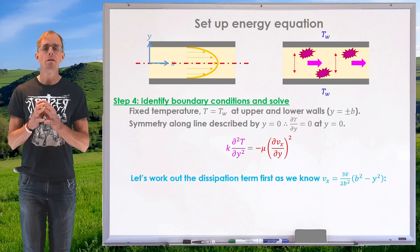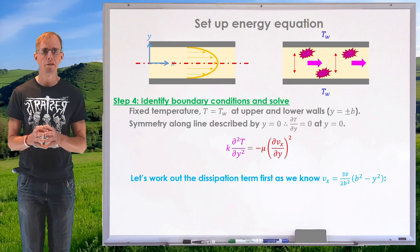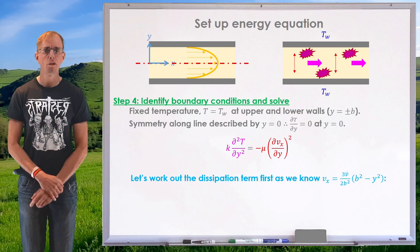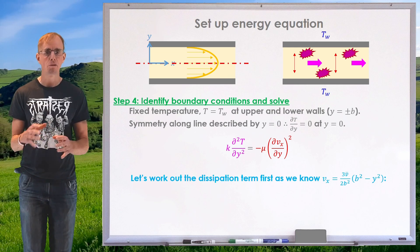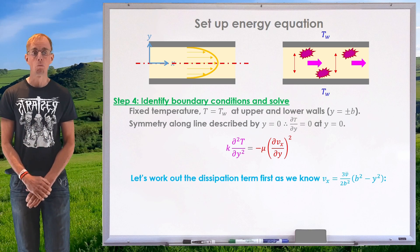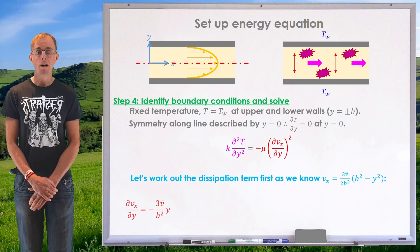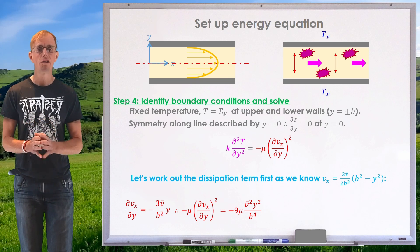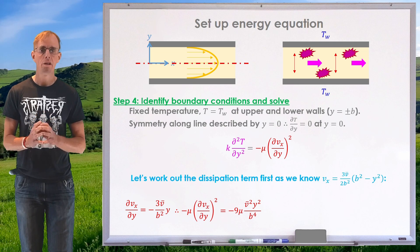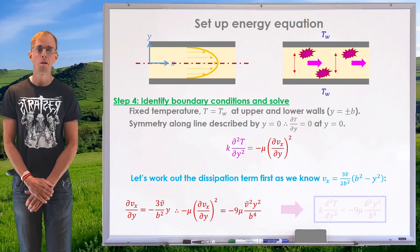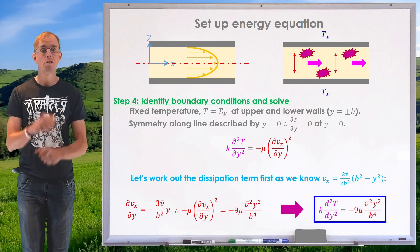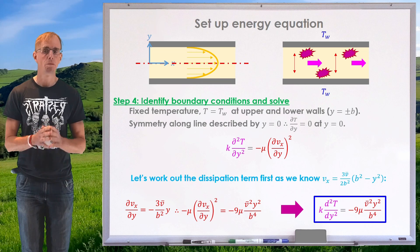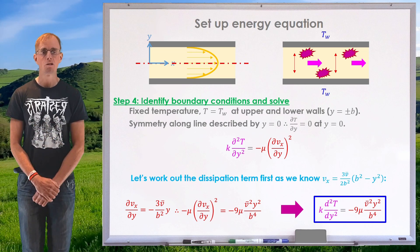Looking at the viscous dissipation term dvx/dy squared: my x-direction velocity is 3v-bar over 2b squared times (b squared minus y squared). Taking the derivative with respect to y, I end up with the viscous dissipation term equal to minus 9 mu v-bar squared y squared over b to the power 4. Substituting that into my partial differential equation, I get an ordinary differential equation: d²T/dy² equals a function of y squared — a very simple ODE we can integrate directly with our boundary conditions.